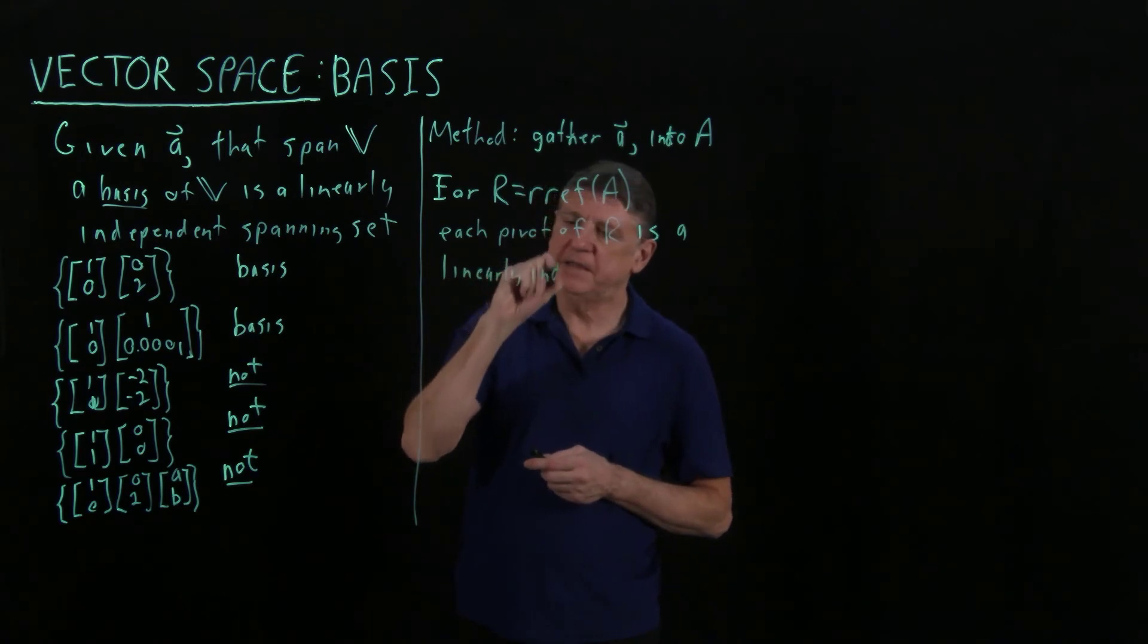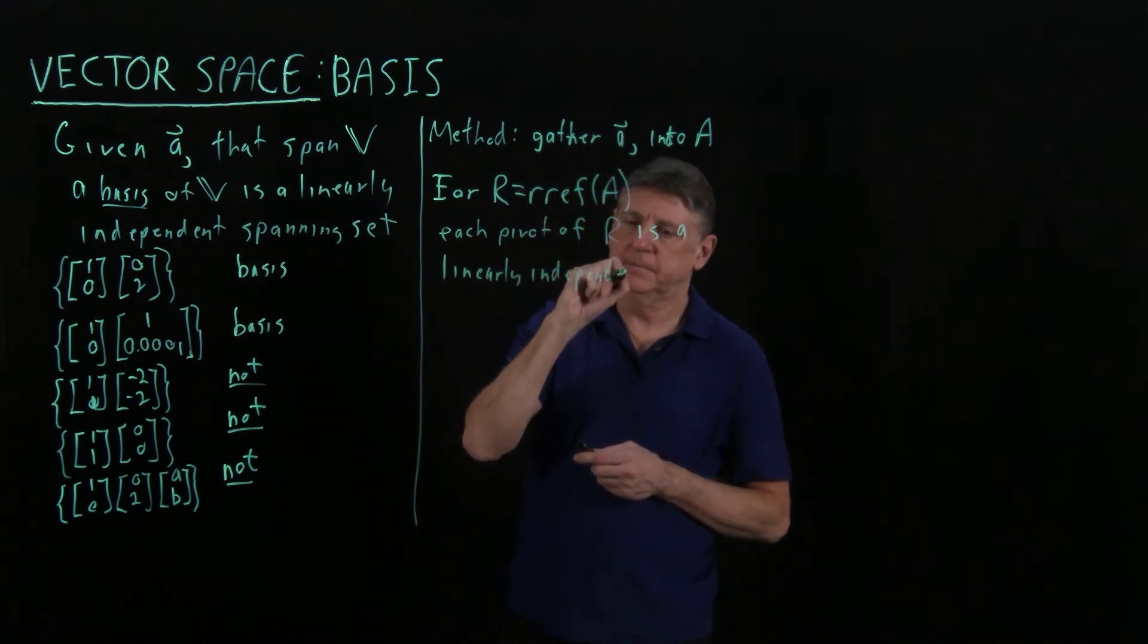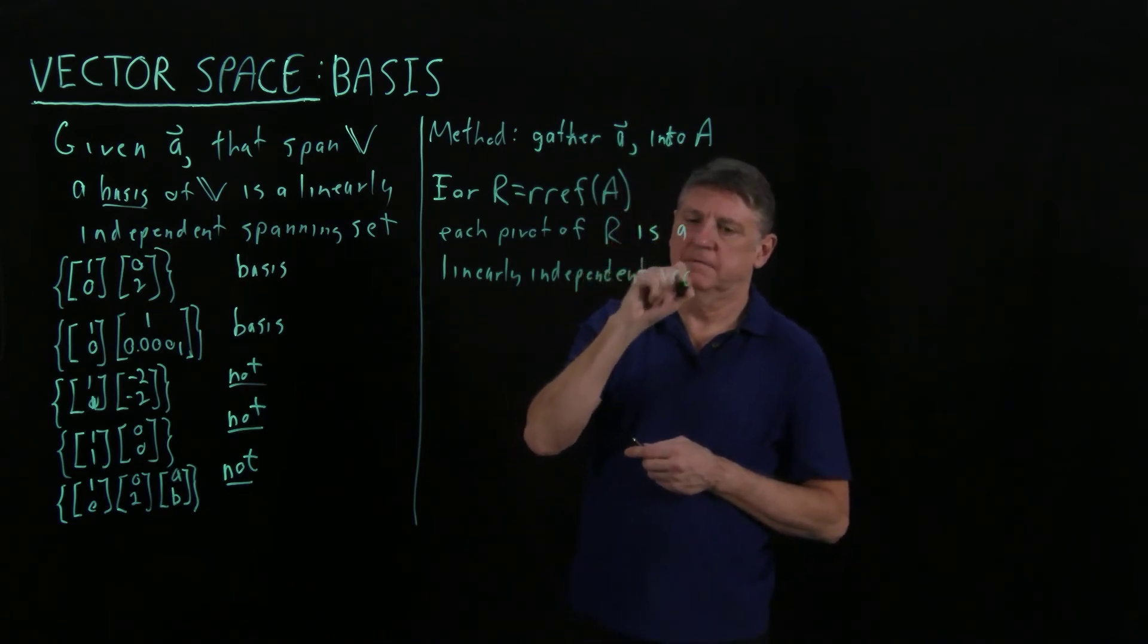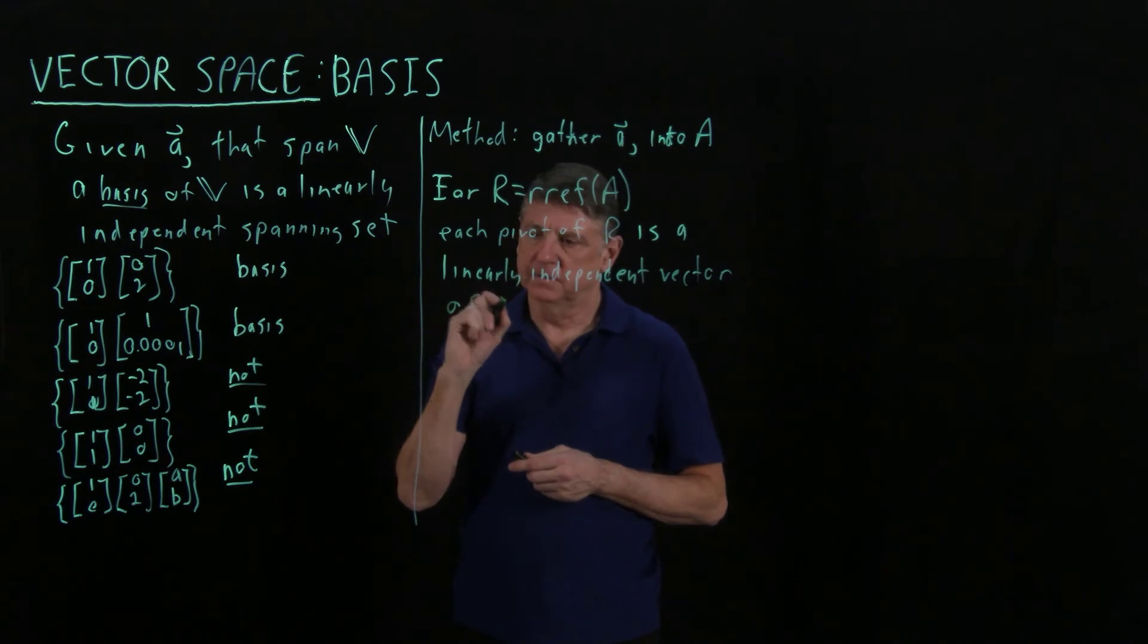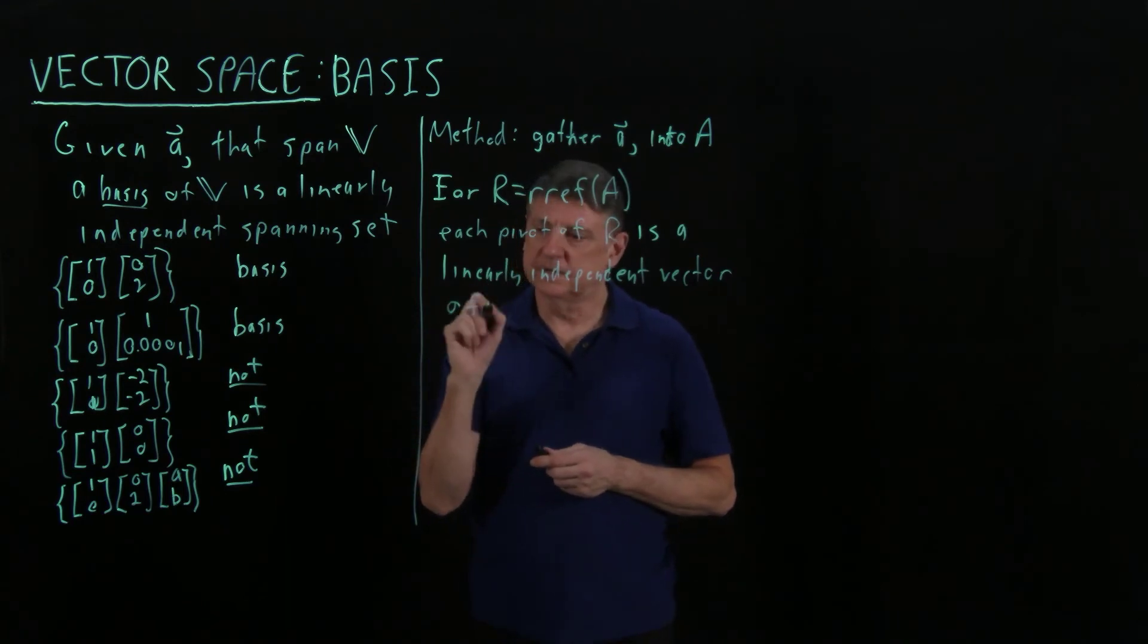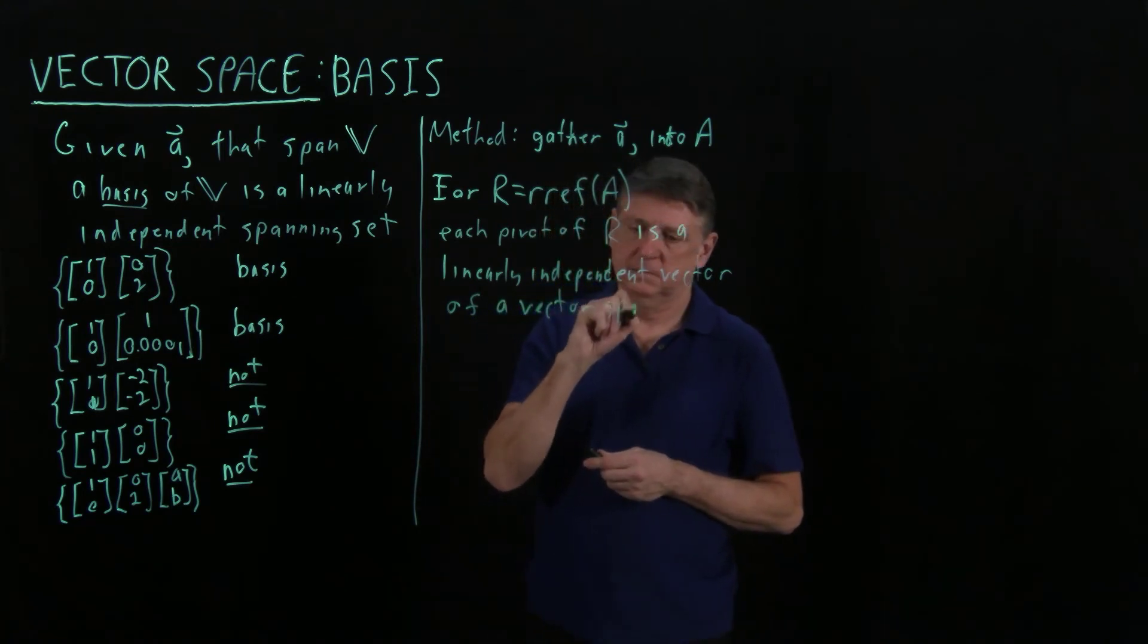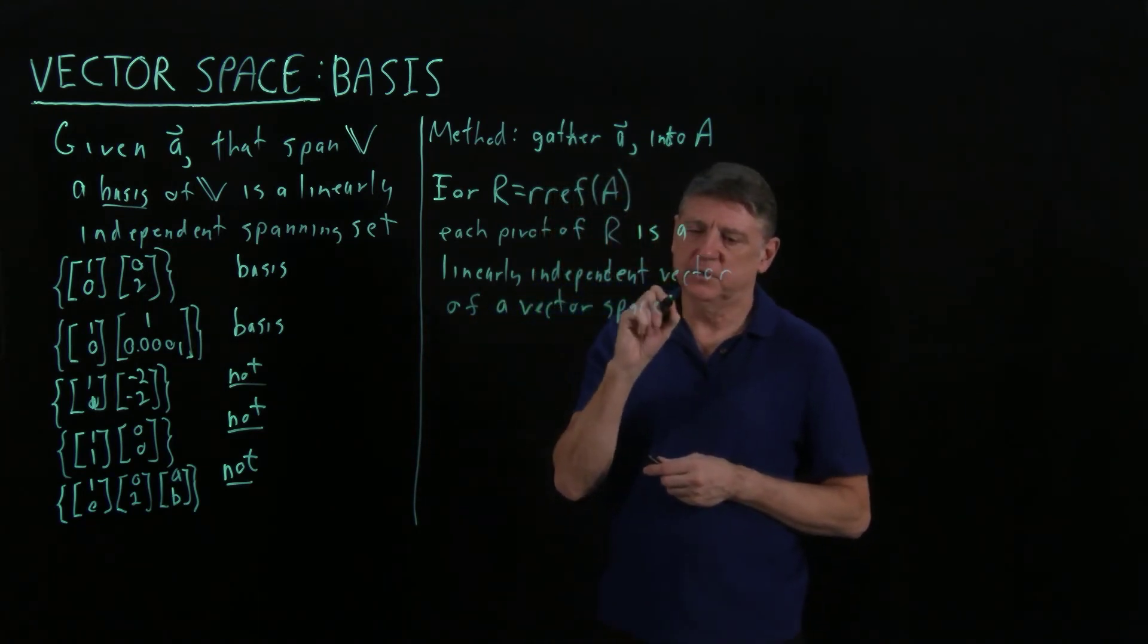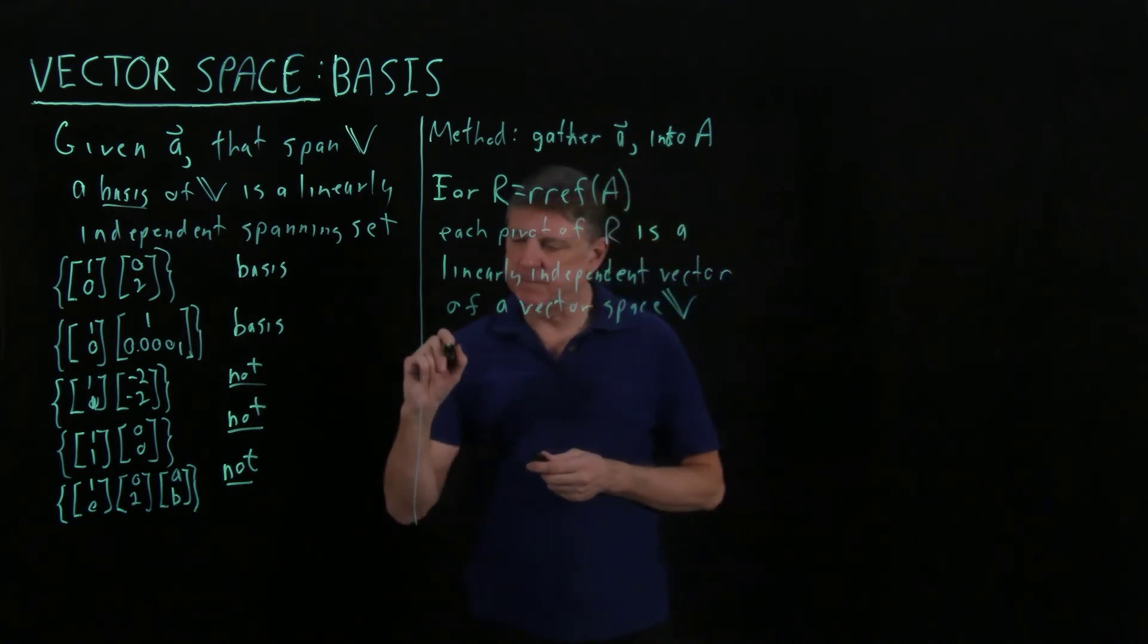Each pivot of R is a linearly independent vector of the whole of a vector space, which we'll call double barrel V. So let's take an example.